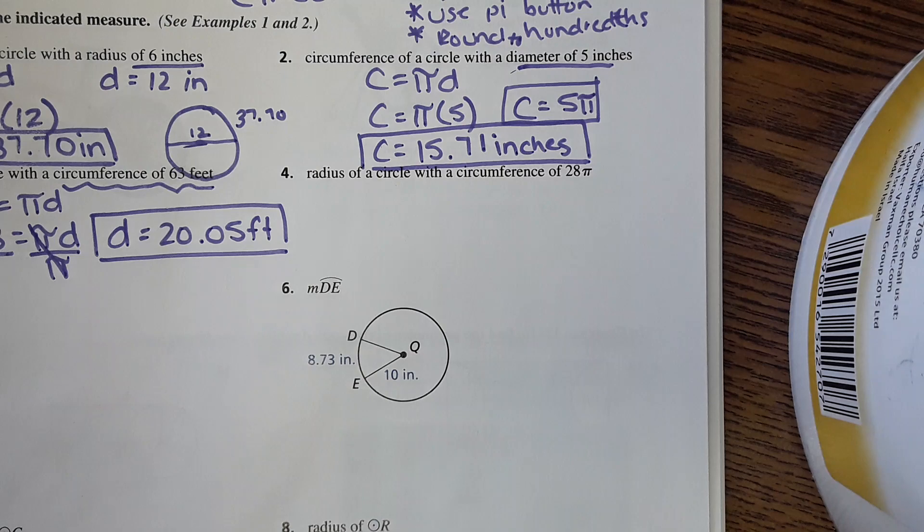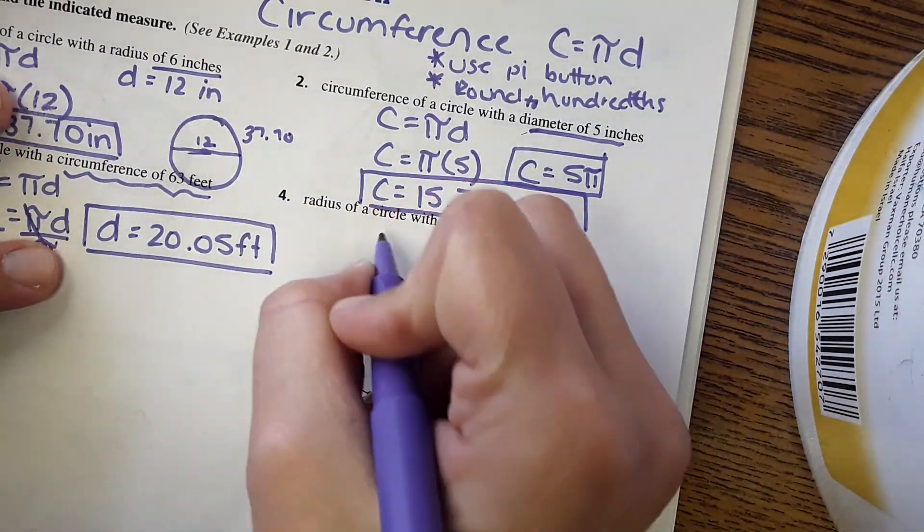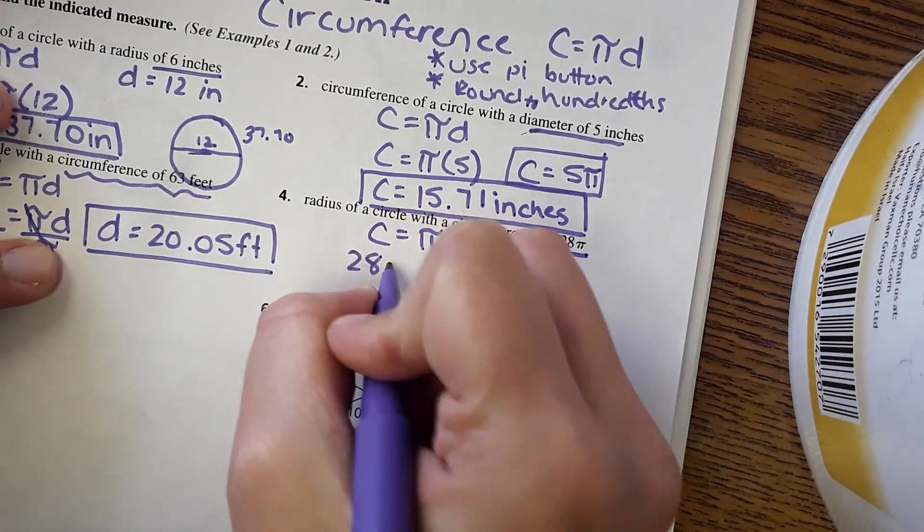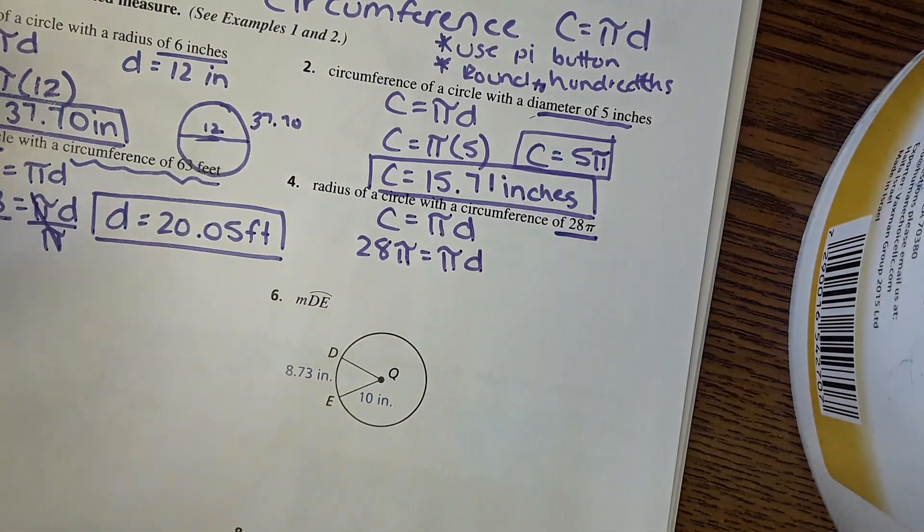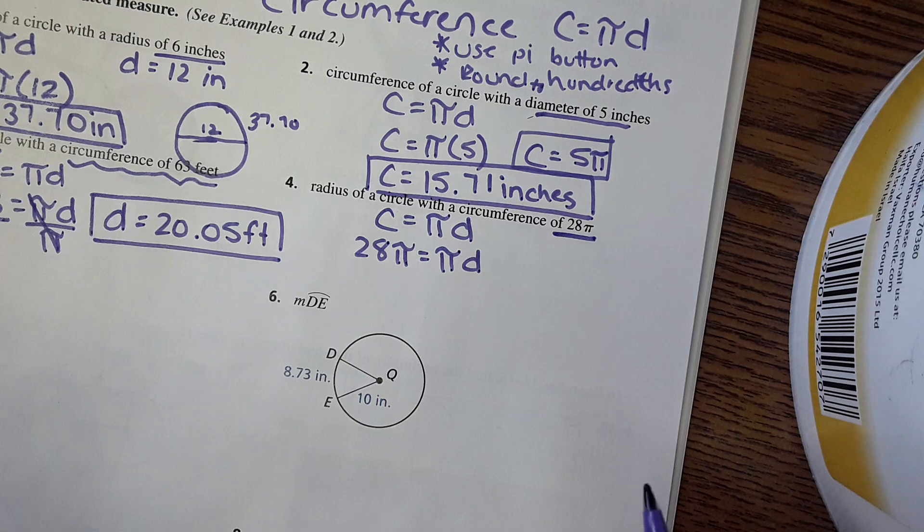Number four, radius of circle with a circumference of twenty-eight pi. Okay, so circumference equals pi times diameter. So circumference is twenty-eight pi equals pi times diameter. It wants to know the radius, but we're gonna have to solve for diameter first.